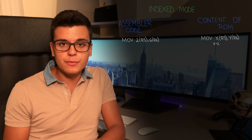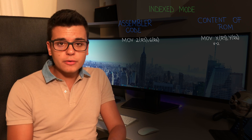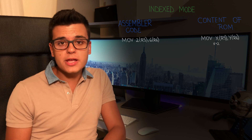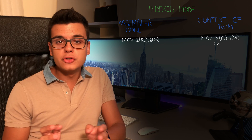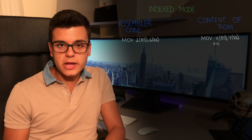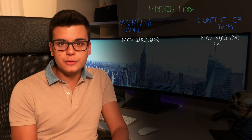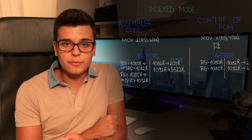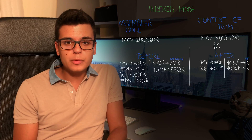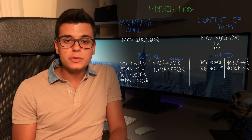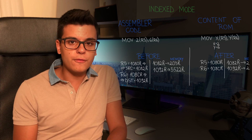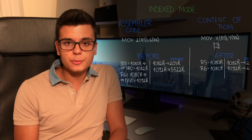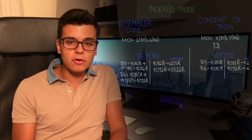The second addressing mode, named indexed mode, treats the contents of the registers as memory addresses. These tell us where we should fetch data from in case of source operands, or where we should store data in case of destination operands. Moreover, we can add an offset to these addresses by writing a number before the register name, which is written inside brackets. In the example on the right side of the screen, we are moving the contents found at the source address — which is the value of R5 plus 2 — to the destination address, which is the value of R6 plus 6.